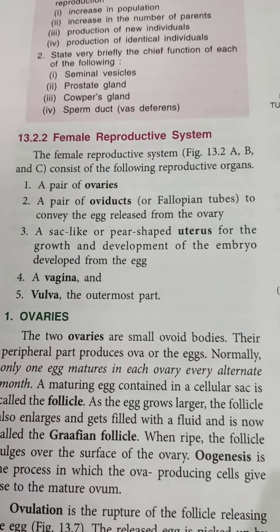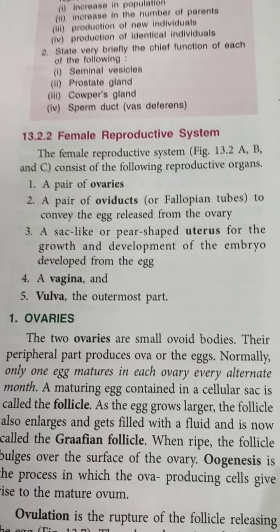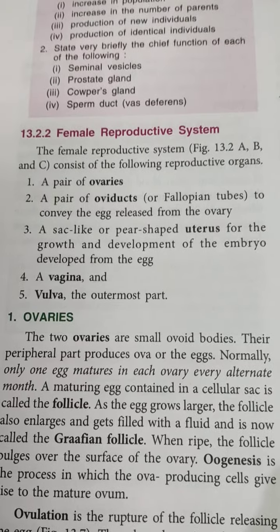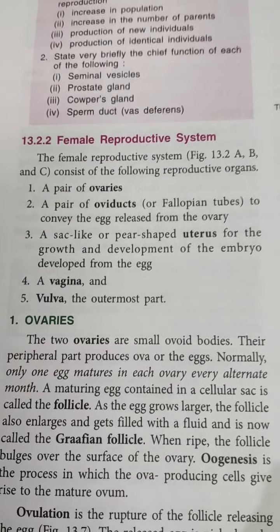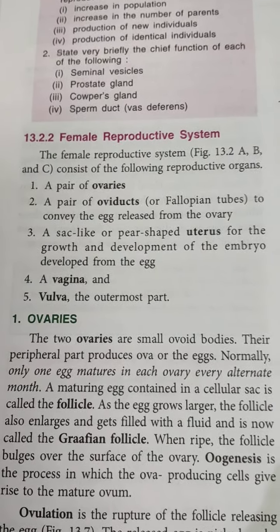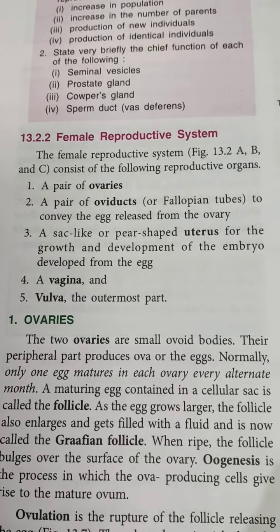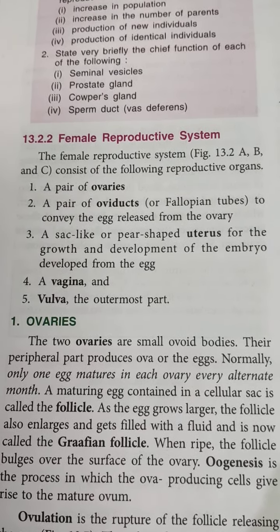Hello class 10. Today I am starting with the female reproductive system. I hope there are no problems regarding the previous part of this chapter. The female reproductive system consists of a pair of ovaries, a pair of oviducts, the sac-like structure known as the uterus, a vagina, and vulva.